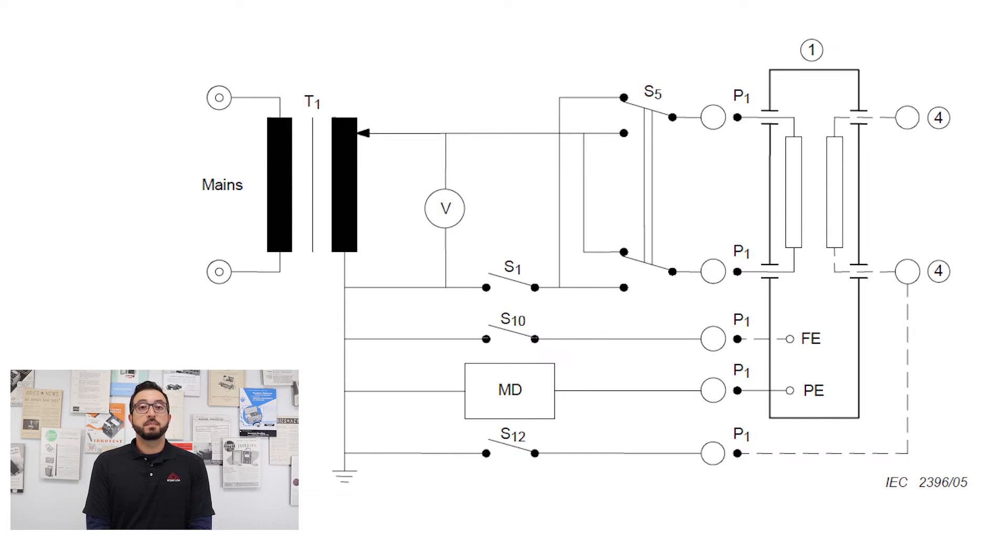The measuring circuit that you see on the screen is what is required as per the 60601 standard to make the earth leakage current measurements.